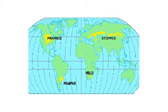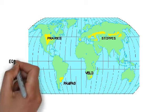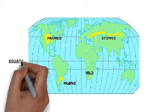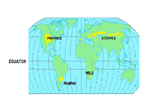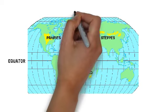On this map you can see the grasslands by their different names known in the different continents.